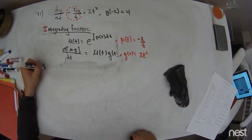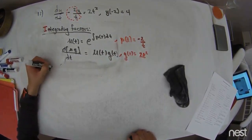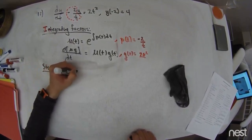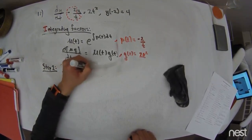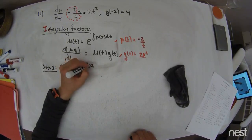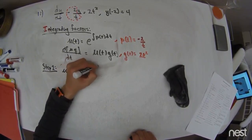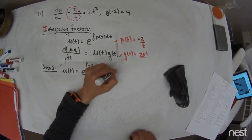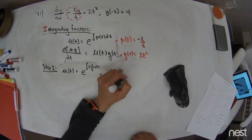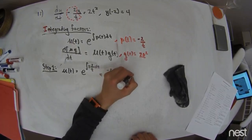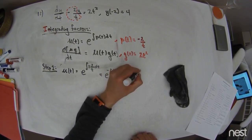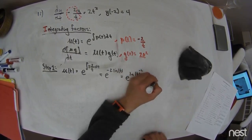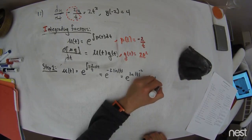So for step 1, I compute my mu. Mu of t is equal to e to the integral of p of t, which is negative 2 over t dt. I have, this is e to the negative 2 times the natural log of the absolute value of t, which is e to the natural log of the absolute value of t to the negative 2, which is absolute value of t to the negative 2, which is 1 over the absolute value of t squared.